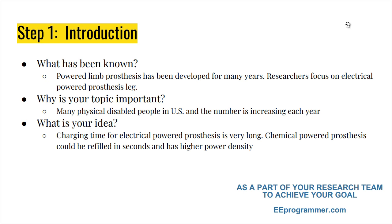Assume I want to write a research paper about a chemical-powered prosthesis leg — like a robotic leg helping physically disabled people. How am I going to answer those questions? What has been known? Powered prosthesis legs have been developed for many years, and scientists have focused only on electrical power for prosthesis legs.